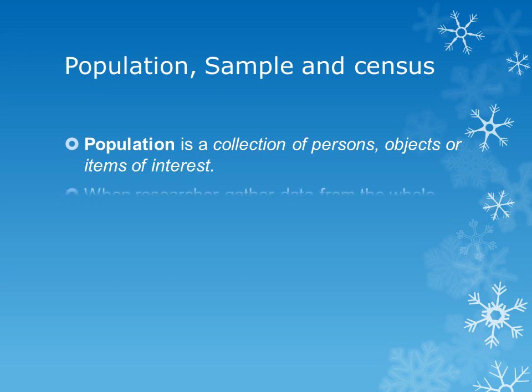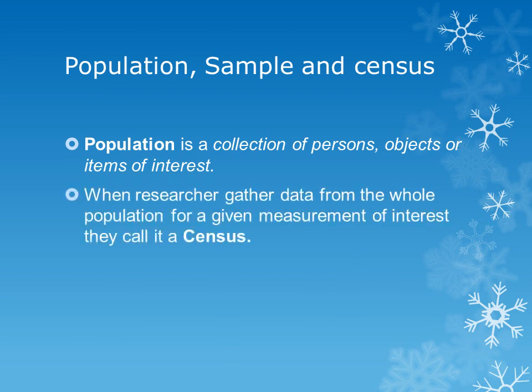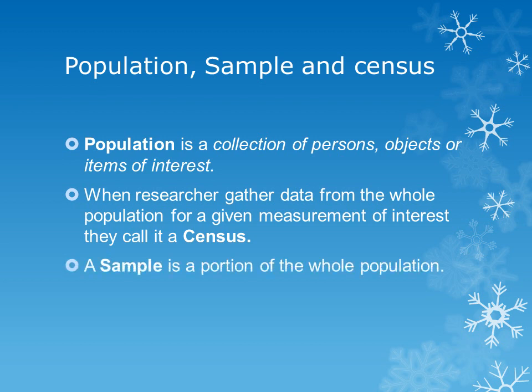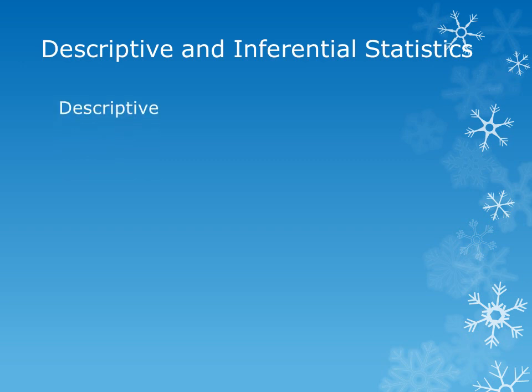Now we will see some basics of statistics. First is population — population is a collection of persons, objects, or items of interest. Census: when researchers gather data from the whole population for a given measurement of interest, they call it a census. And sample: a sample is a small portion of the whole population. Generally we don't take the whole population for a study; instead, we select a small sample from the whole population.